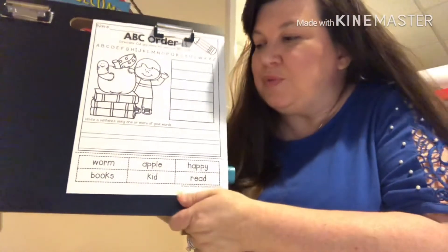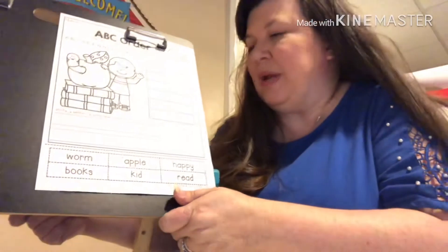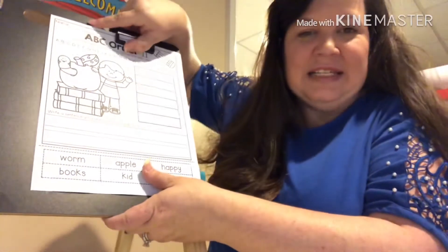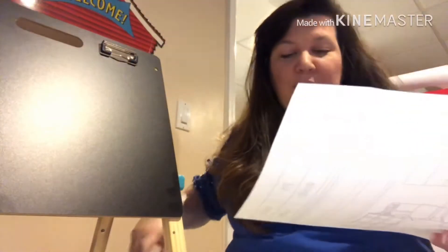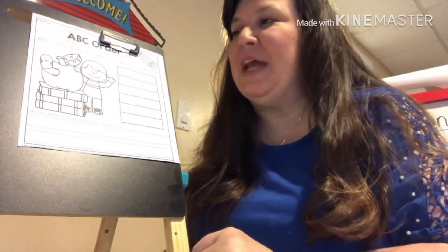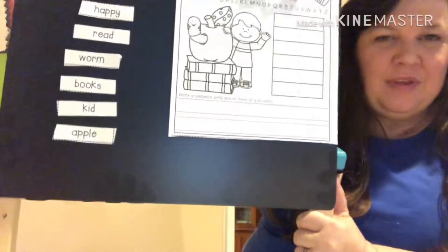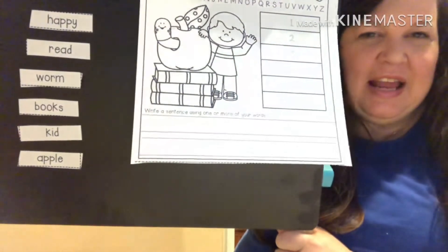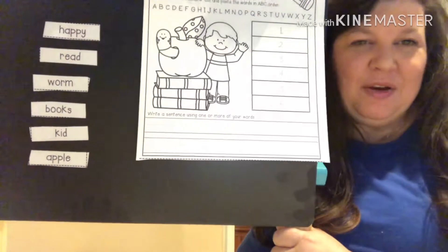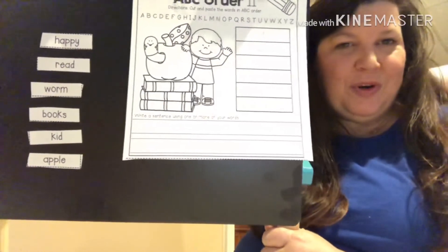So what Mrs. Romer is going to do now is take down my sheet and, just like you would, I'm going to cut out my words. Mrs. Romer took a little recess and I put all of my words on the board so that you could see them. There they are. And what we are going to do is put them in ABC order.